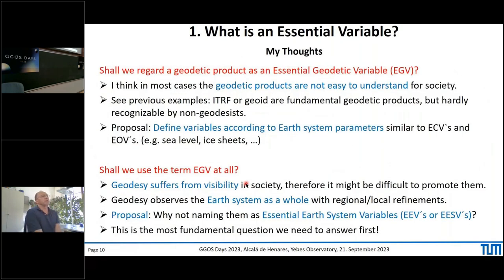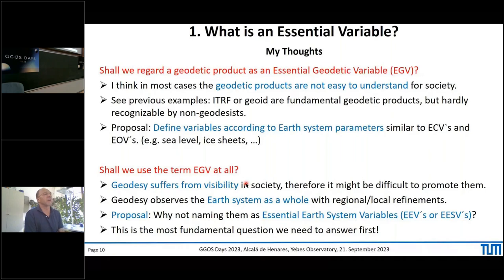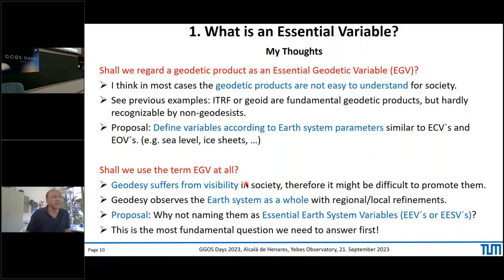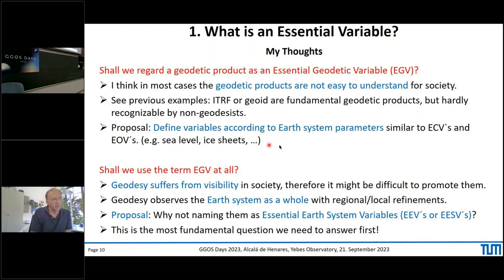These are my thoughts about what is an essential variable — an intermediate conclusion. Shall we regard a geodetic product as an essential geodetic variable? In most cases, no, because they are not easy to understand for society if society is our target group. ITRF is very important but hardly anybody outside geodesy really understands it completely — it's not well recognized by non-geodesists. My proposal is to define variables according to earth system parameters, similar to how it is done for climate and ocean variables.